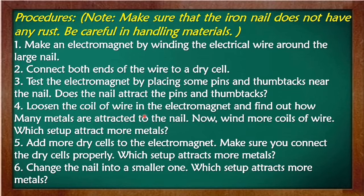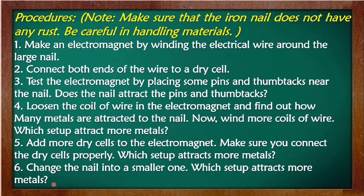Count the coils of wire in the electromagnet and find out how many metals are attracted to the nail. Now wind more coils of wire — which setup attracts more metals? Add more dry cells to the electromagnet. Make sure you connect the dry cells properly — which setup attracts more metals? Change the nail to a smaller one — which setup attracts more metals? You have to do this activity so that you can get the correct answer.